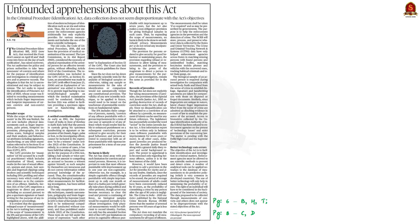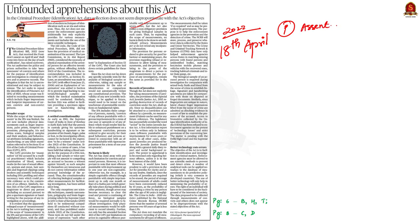Have a look at this editorial article. It talks about the recently passed bill named the Criminal Procedure Identification Bill 2022. This bill has received the assent of the president on April 18, 2022, and hence now it is an act. One of the specific and contradictory features of this act is that it authorizes the police and prison authorities to take measurements of convicts and others for the purpose of identification and investigation in criminal matters and to preserve records. The allegation is that many say the act is unconstitutional and may be subjected to misuse.